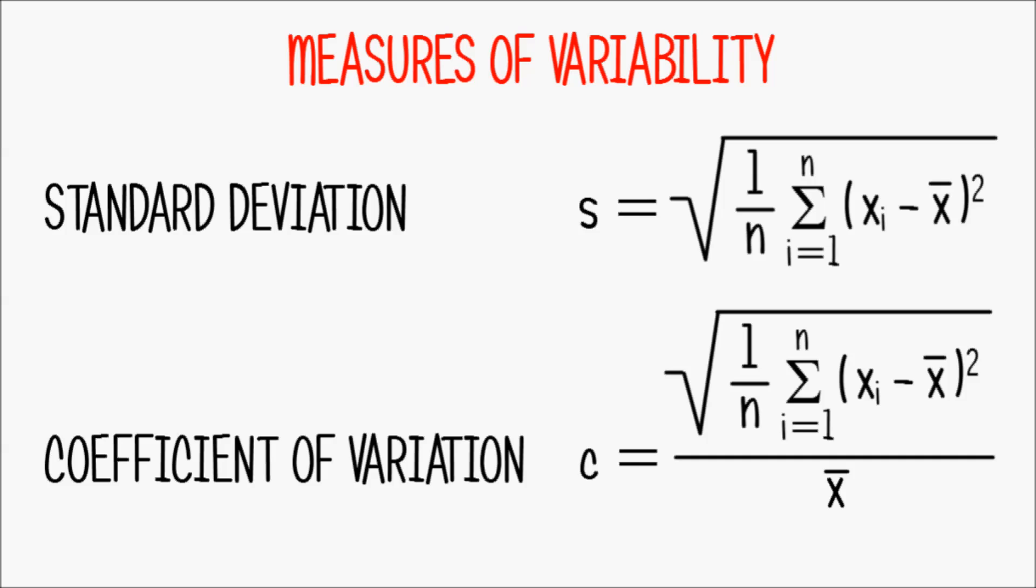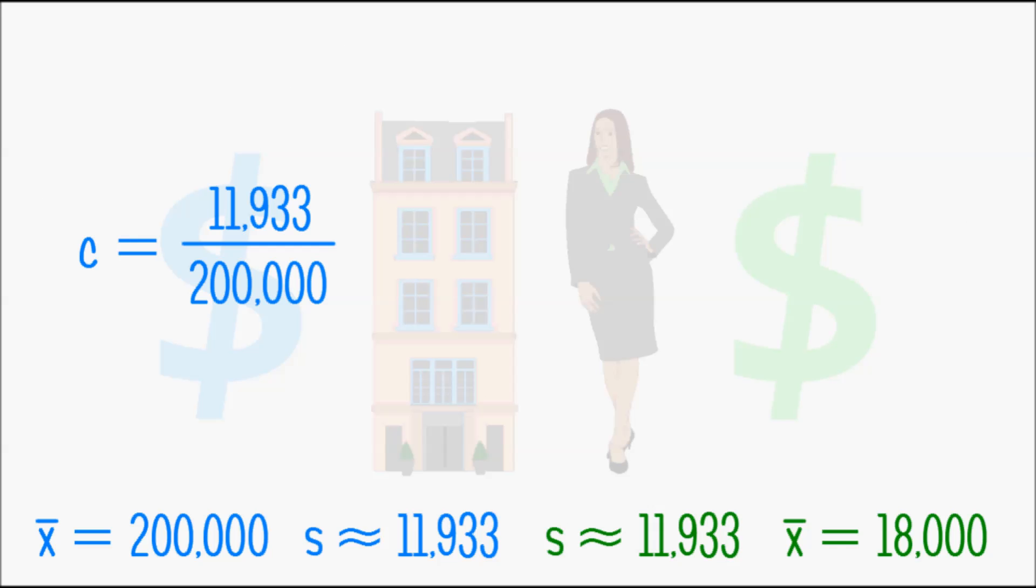For Patrick's agency the coefficient of variation is 11,933 divided by 200,000 which is approximately 0.06 and for Anna it is 11,933 divided by 18,000 which is approximately 0.66.